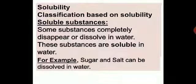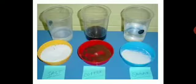Now we are learning the property of solubility. Substances can be classified on the basis of solubility. Some substances completely disappear or dissolve in water — these are called soluble substances. They are soluble in water. Examples include salt, coffee, and sugar — they all dissolve in water, and therefore they are called soluble substances.